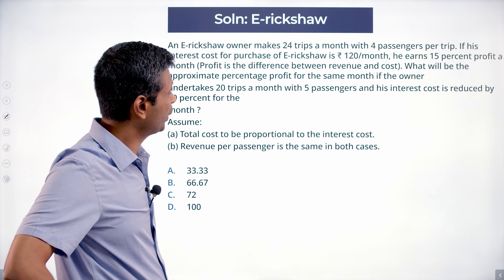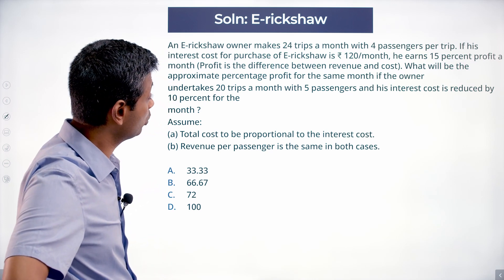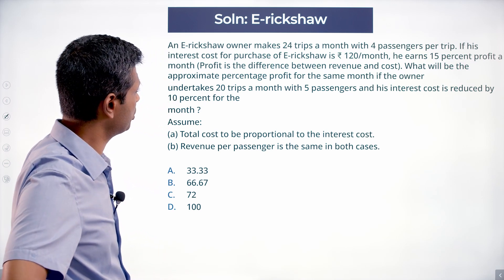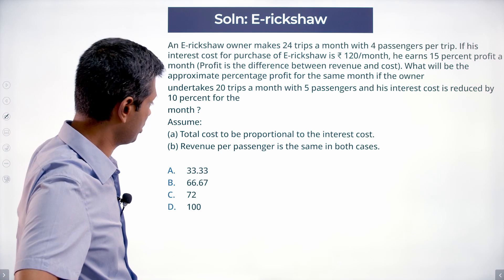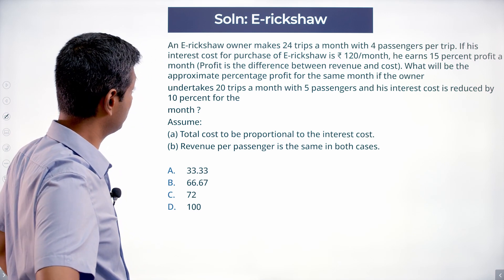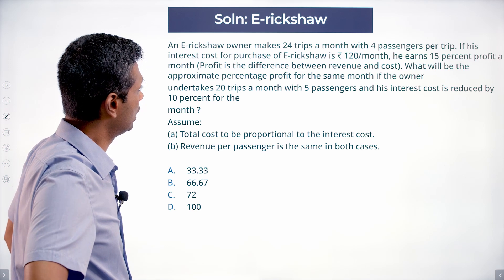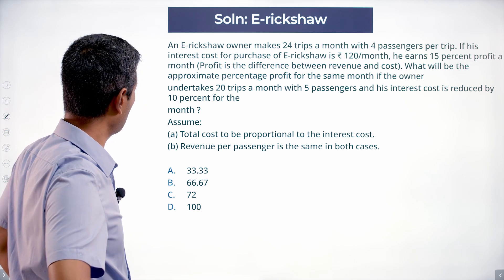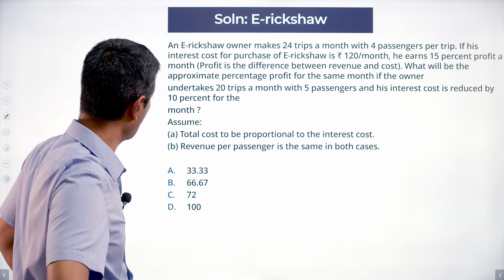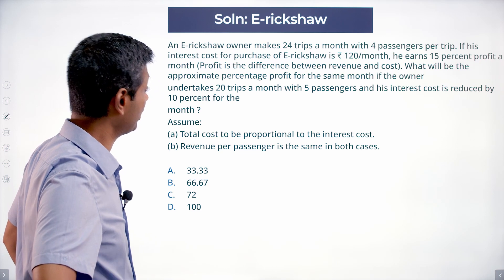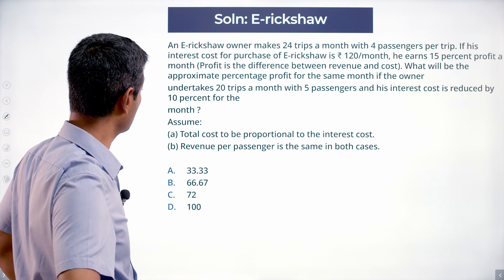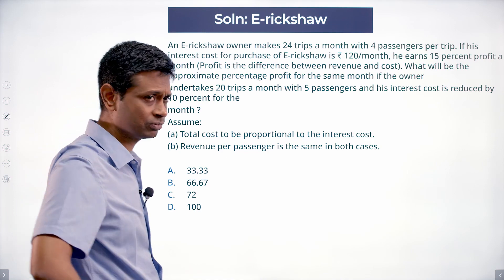An eRickshaw owner makes 24 trips a month with 4 passengers per trip. His interest cost for purchase of the eRickshaw is 120 rupees per month, and he earns 15% profit a month. What will be the approximate percentage profit for the same month if the owner undertakes 20 trips a month with 5 passengers and his interest cost is reduced by 10% for the month?